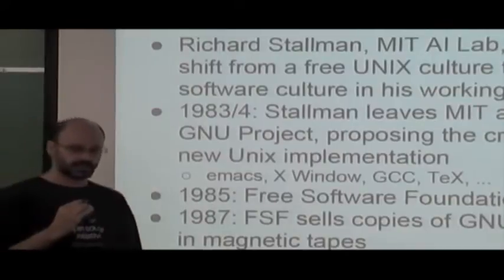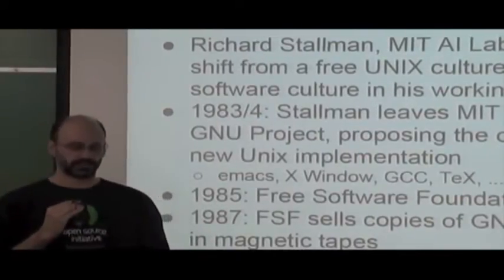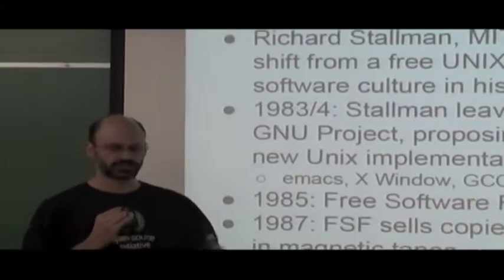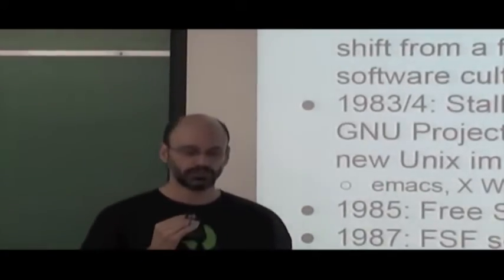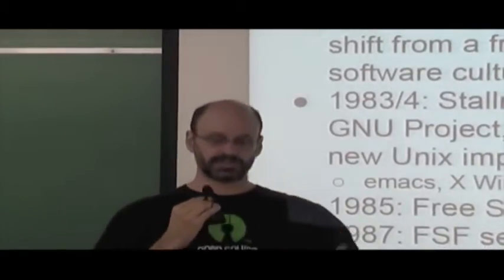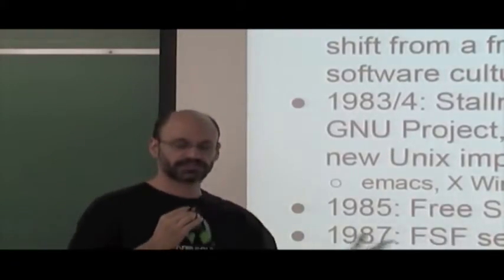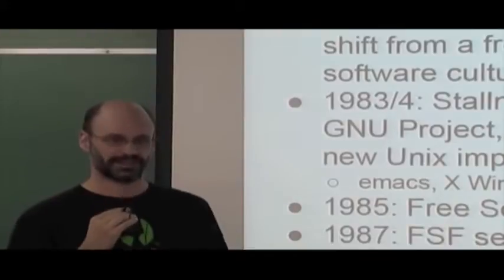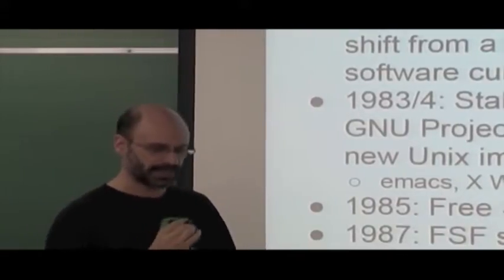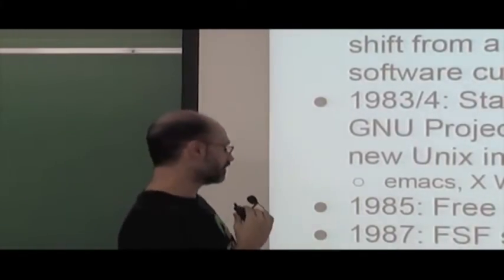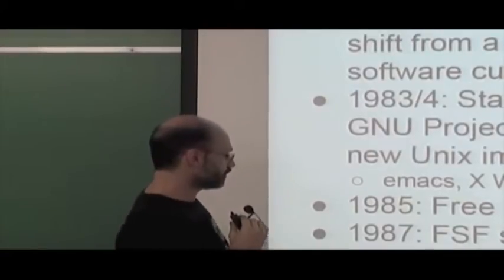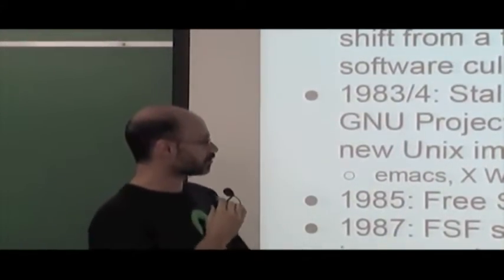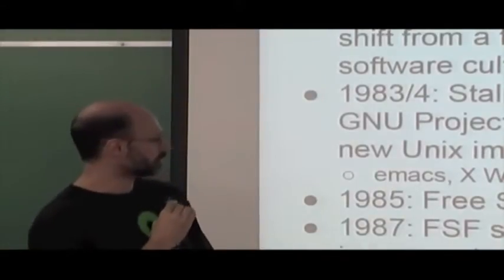In 1985, Stallman founded the Free Software Foundation. By 1987, the Free Software Foundation was selling copies of the GNU system for around $150 on magnetic tapes to raise money for the cause of free software. In 1989, he established the ideas of Copyleft and wrote the first version of the GPL.